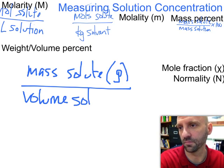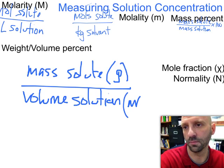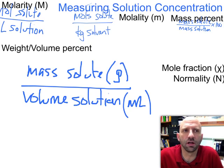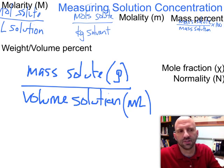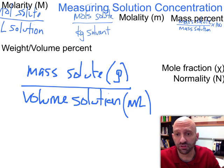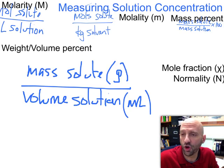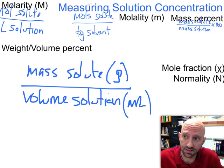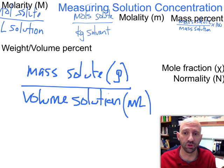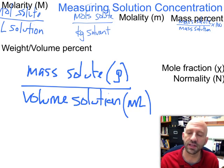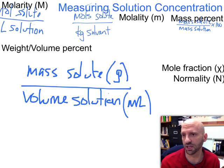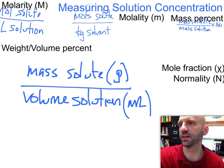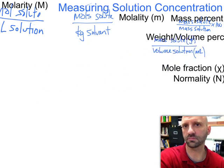Now weight by volume percent is used a lot in consumer products. If you look on the back of detergents, sometimes you'll see different percentages of materials there, and those are often mass by volume percent or weight by volume percent. This is handy because you don't need to know the molar mass of anything to calculate this. You just need the mass of your solute divided by the total volume of solution in grams and milliliters respectively.